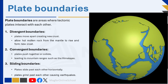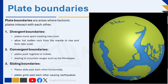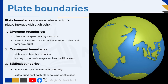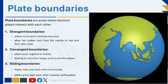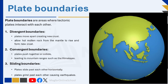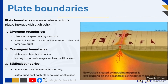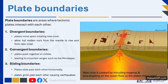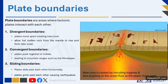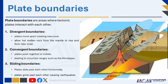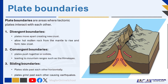Plate boundaries are areas where tectonic plates interact with each other. Tectonic plates are constantly moving and colliding, resulting in geological activity such as earthquakes, volcanic eruptions, and the formation of mountains. The movement of these plates is known as plate tectonics. There are three types of interactions at plate boundaries. In divergent boundaries, plates move apart, creating new crust. When plates move apart, they allow hot molten rock from the mantle to rise and form new crust, like the mid-ocean ridges.